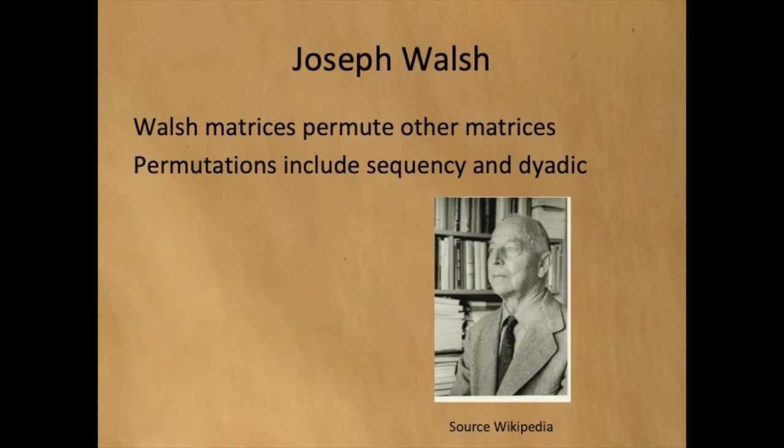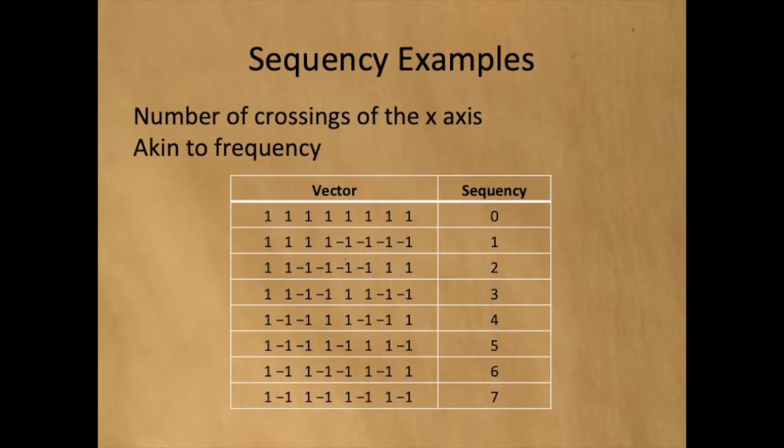Joseph Walsh showed that all permutations of Hadamard matrices are also Hadamard matrices. One common permutation is called Sequency. Sequency is more or less defined as the number of transitions from 1 to minus 1, or vice versa, within a sequence. So, Sequency resembles a discrete frequency.